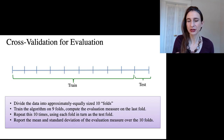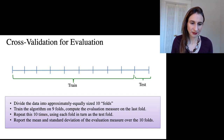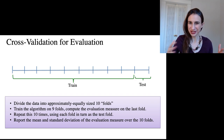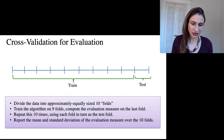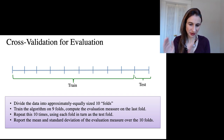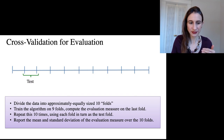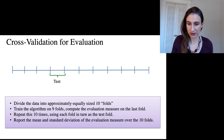Just to review cross-validation for evaluation purposes before launching into nested cross-validation: when doing regular evaluation, you divide the data into 10 folds, reserve one as the test fold, train the algorithm on 9 folds, and compute the evaluation measure on the test fold. You repeat this 10 times, rotating which fold is the test fold. In the end, you report the mean and standard deviation of the evaluation measure over those 10 folds.